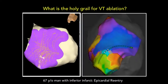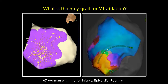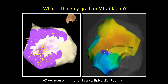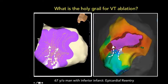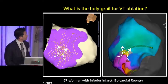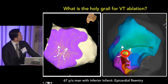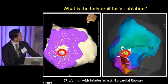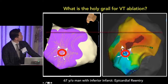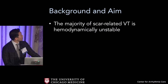When there's a single VT, the critical isthmus is really the holy grail, and the identification of that in sinus rhythm is ideal. This is an epicardial reentrant circuit validated both on Rhythmia and Navix in an inferior infarction. If we were able to localize this critical isthmus site during sinus rhythm, that would be advantageous clinically. So can they be identified during functional mapping of sinus?